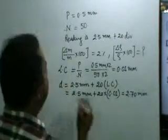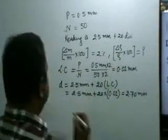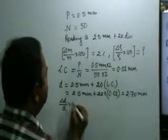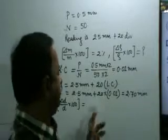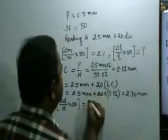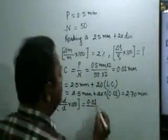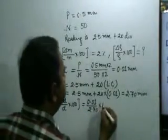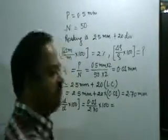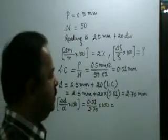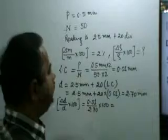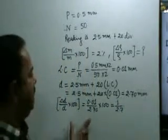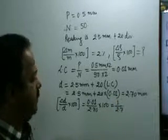Now we can find the percentage error in diameter, that is delta d divided by d into 100. Delta d equals the least count = 0.01 mm, and diameter d = 2.70 mm. So the percentage error in diameter = (0.01 / 2.70) × 100 = 1 / 2.7 percent.